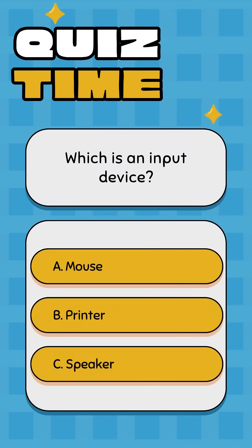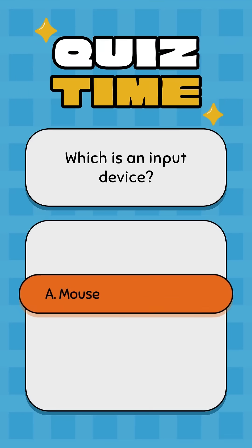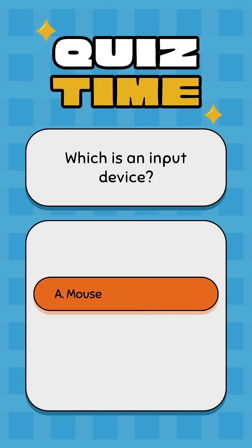Which is an input device? A: Mouse, B: Printer, C: Speaker. Correct answer: A, Mouse.